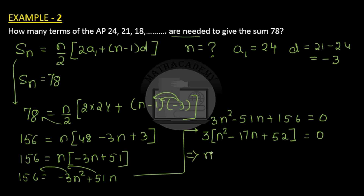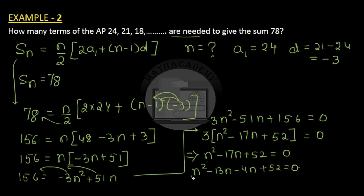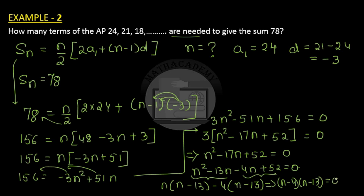Applying the null factor law, we factor n² − 17n + 52 = 0 by splitting the middle term: 52 = 13 × 4, so we write (n − 13)(n − 4) = 0. This gives two values: n = 4 and n = 13.